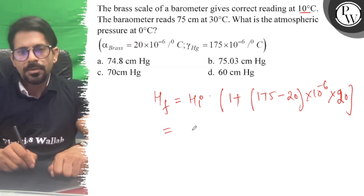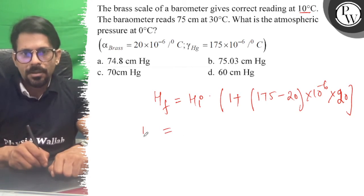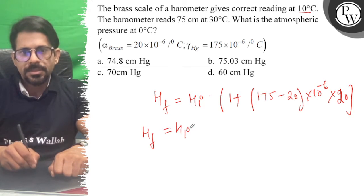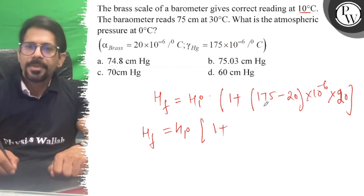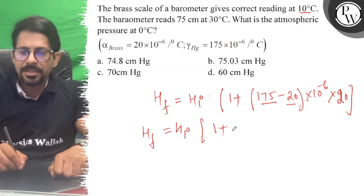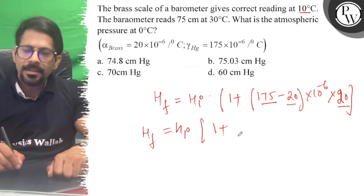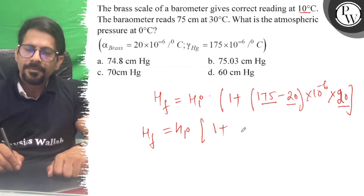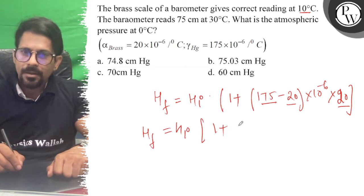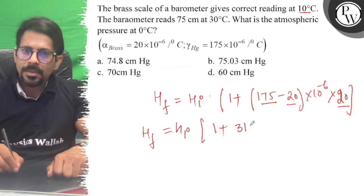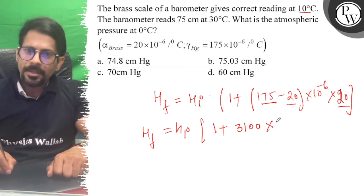So that is equal to H final equals H initial times [1 plus (175 minus 20)], I think we have 155 into 20. That is 155 into 20 is 3100. So 3100 times 10 to the power minus 6.